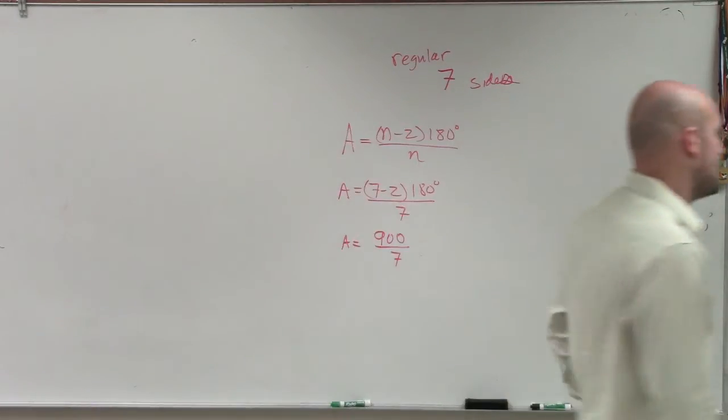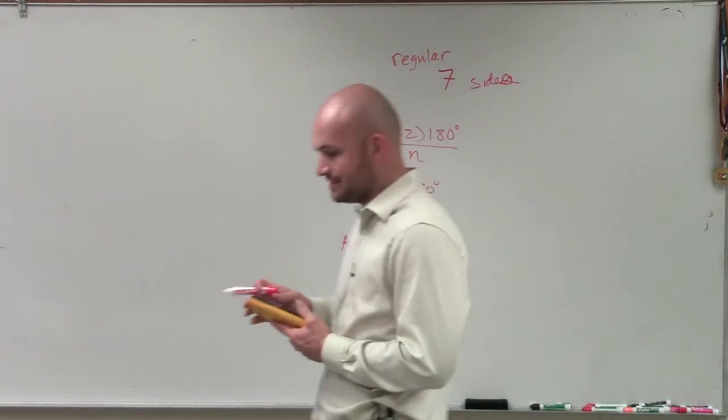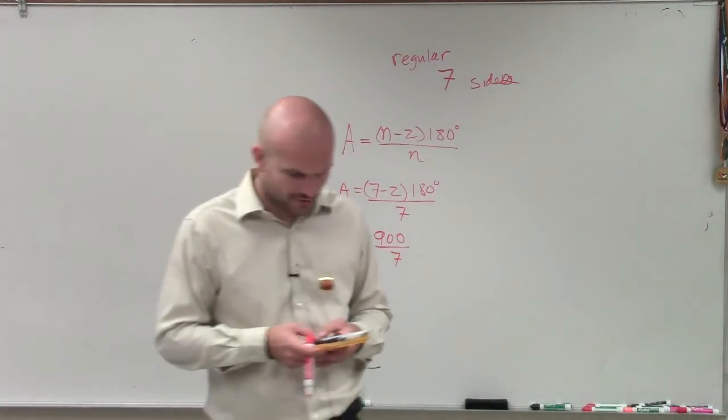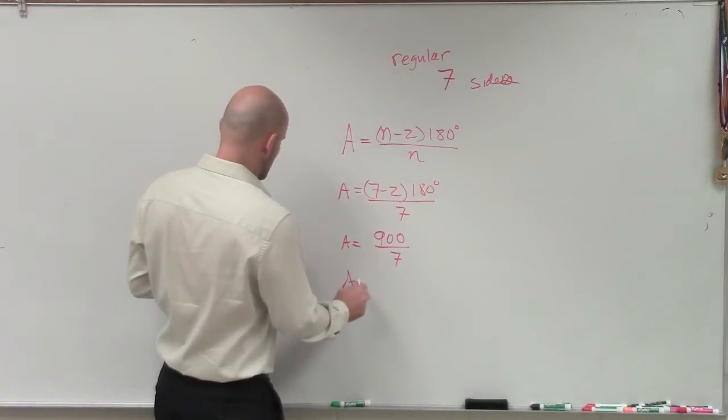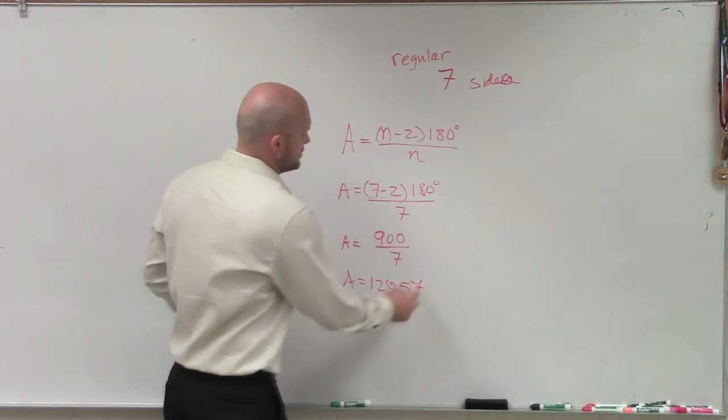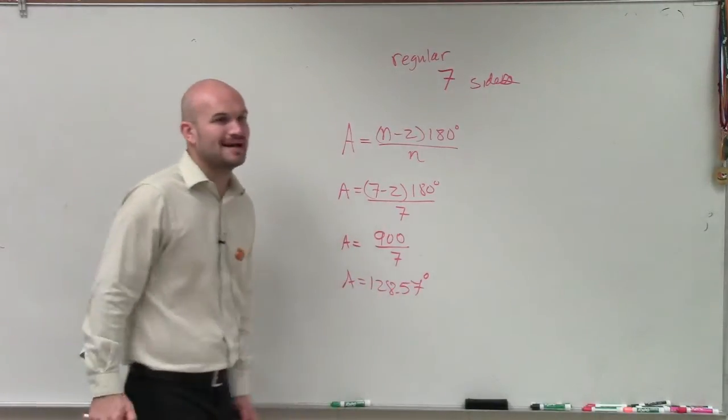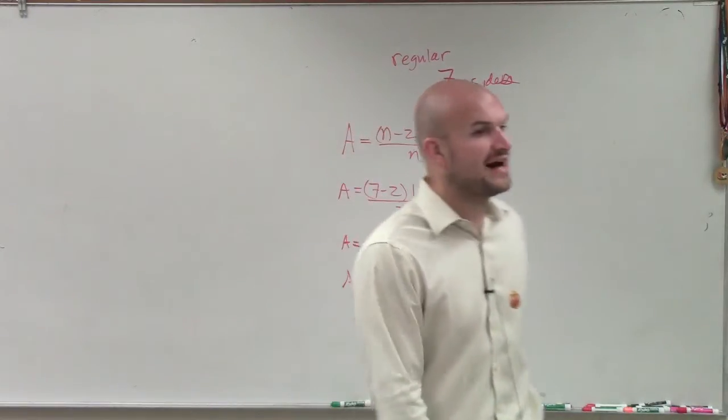Now I take 900 divided by 7, and that's going to be the measure of all the interior angles. 900 divided by 7 means A equals 128.57 degrees. So that is the measure of all the interior angles.